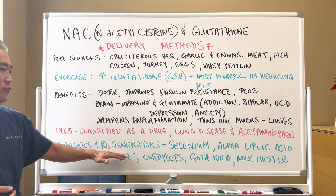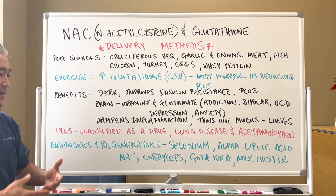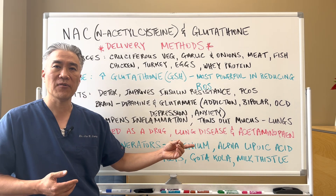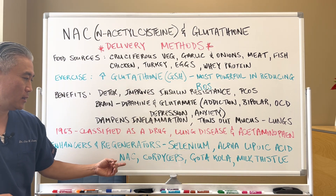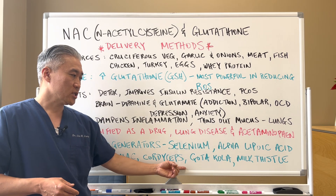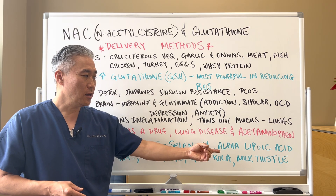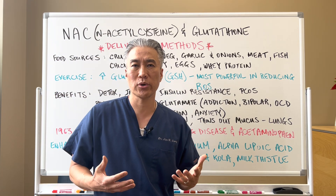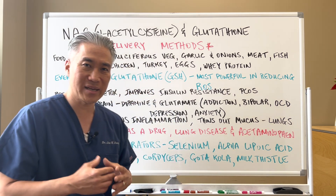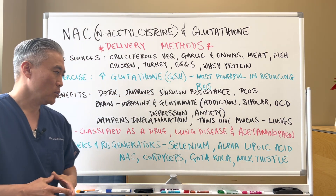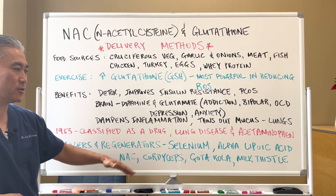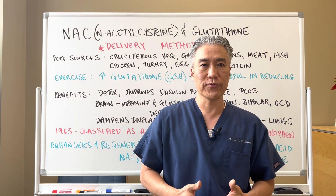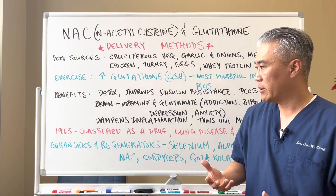Enhancers and regenerators of glutathione include things like selenium, alpha-lipoic acid, NAC, cordyceps, goticula, and milk thistle. You can also use L-glutamine and some fish oil to help enhance absorption and recycling. Glutathione is produced in the liver, and it can be recycled and improved for reuse.